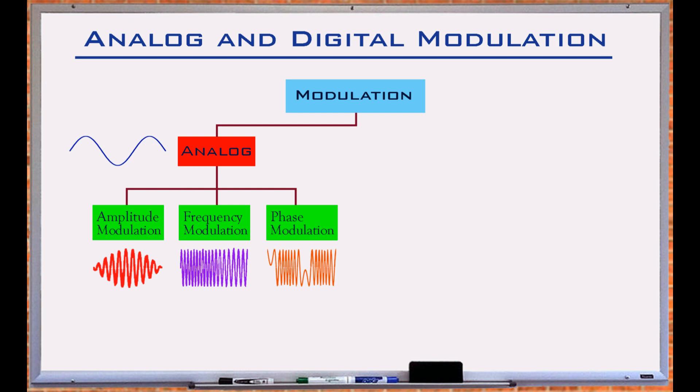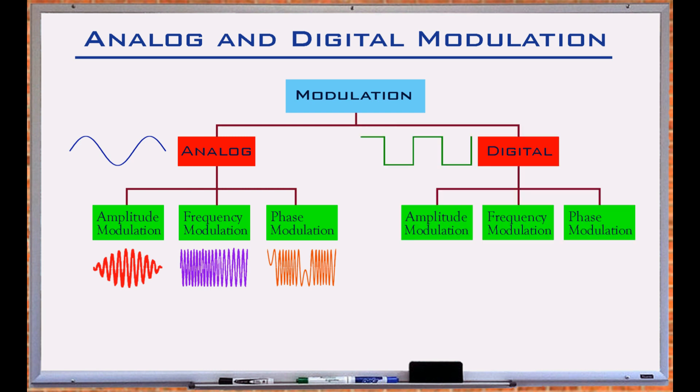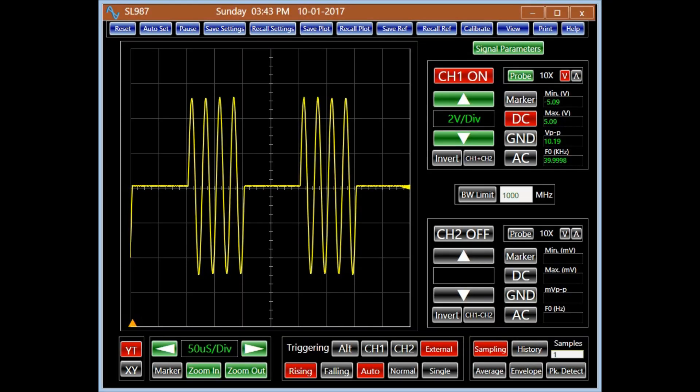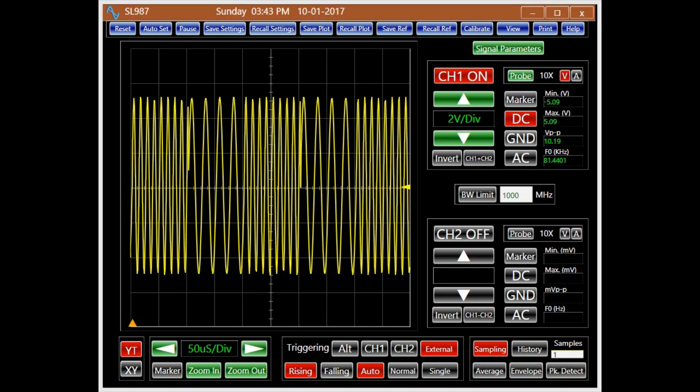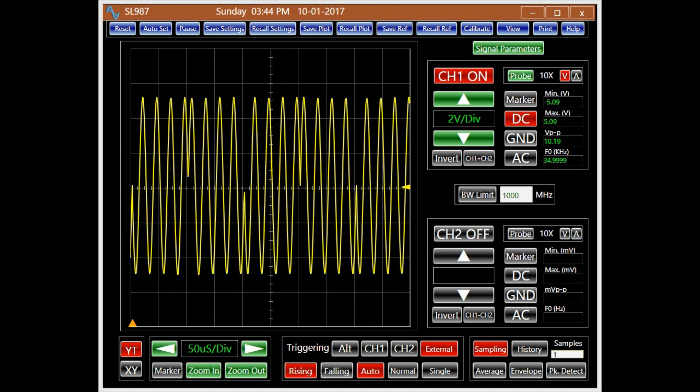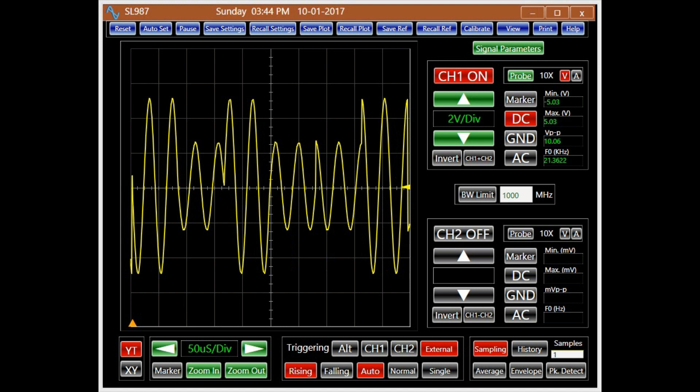The advent of digital signal processing gave birth to digital modulation. Conceptually it is like analog modulation. However, it uses a discrete signal to modulate the carrier signal. Its examples include ASK (Amplitude Shift Keying), FSK (Frequency Shift Keying), PSK (Phase Shift Keying), and QAM (Quadrature Amplitude Modulation).